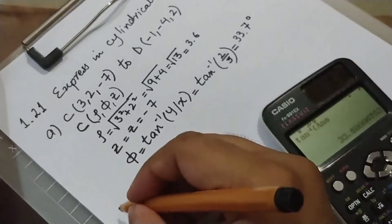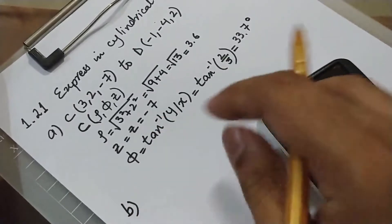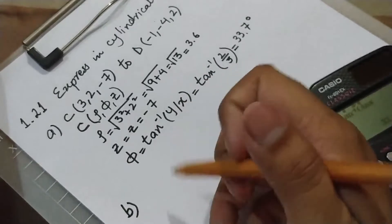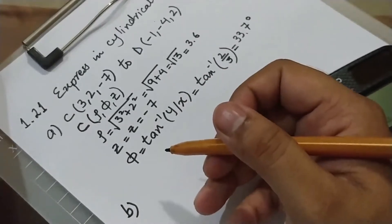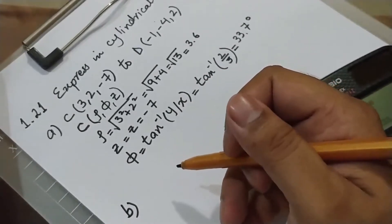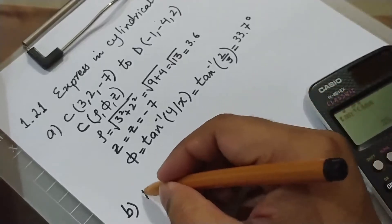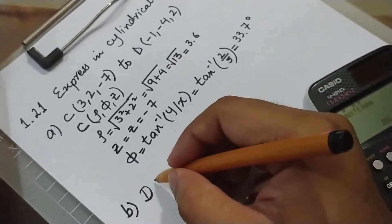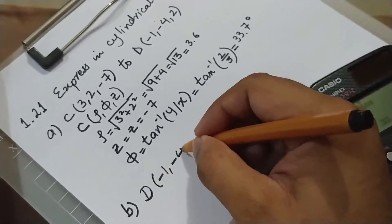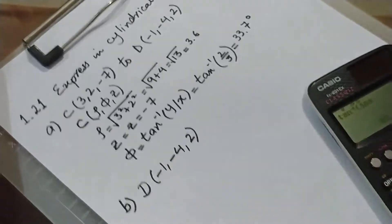But when calculating phi for part B, where we had to find a unit vector directed from D to C, this time the tail is at D. The coordinates of D are (-1, -4, 2) in the Cartesian coordinate system.